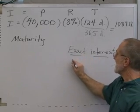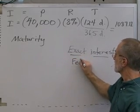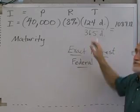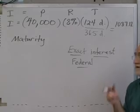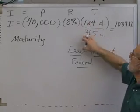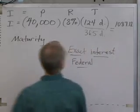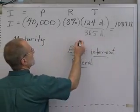So if the problem says exact interest or federal bank or federal government, that means use 365. And we determine that if we multiply this out, we get $1,087.12. That would be the interest.